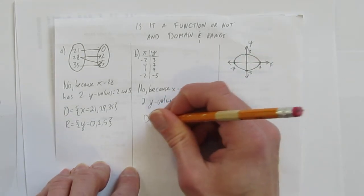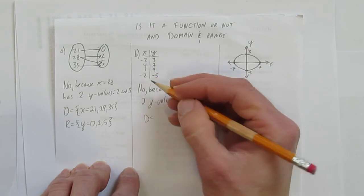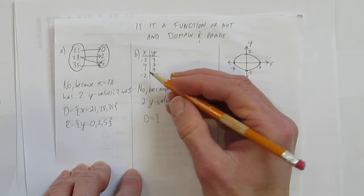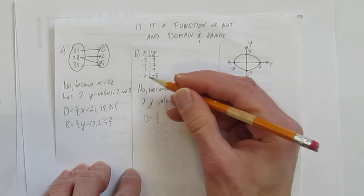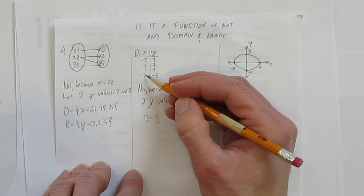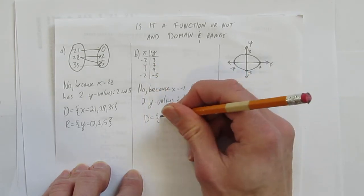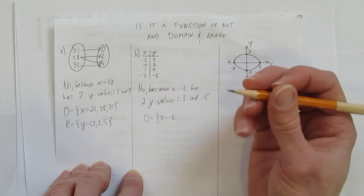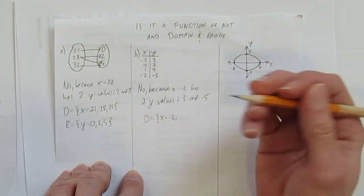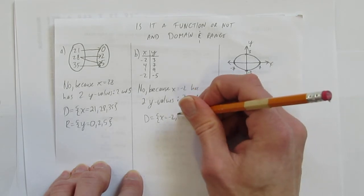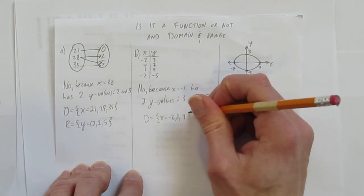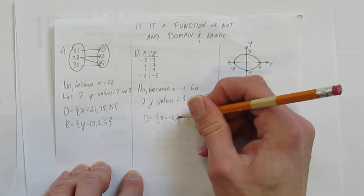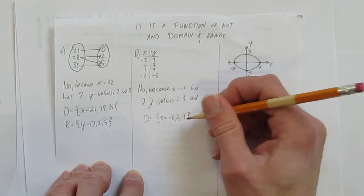But we can still state domain and range. Once again, we've just got some points. So we state what the x's can be, and you'll note that they're not in order, so you should put them in order. And you should also note not to list something twice. What can x be? It can be negative 2. Just put it once. In order, it's negative 2, then 1, then 4. The domain is the set of x equals negative 2 or 1 or 4.